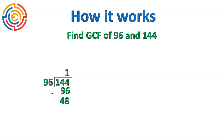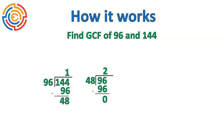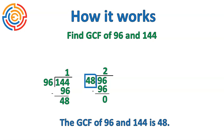Now this is when the algorithm starts to kick in. We take that remainder — the divisor from our previous question goes inside, and our remainder becomes the new divisor. So now we have a new question: 96 divided by 48. There are two groups of 48 inside of 96. We multiply, get 96, and we get an even zero remainder. When you get to the point of having a zero remainder, the number that is our divisor is actually the greatest common factor.